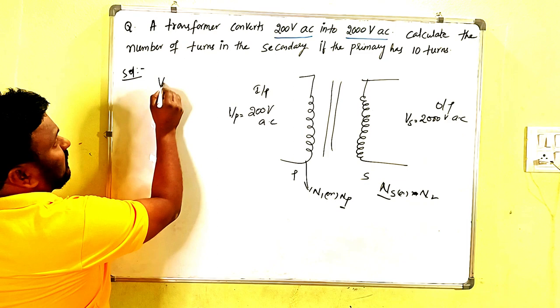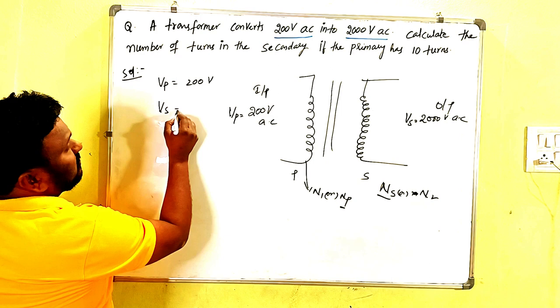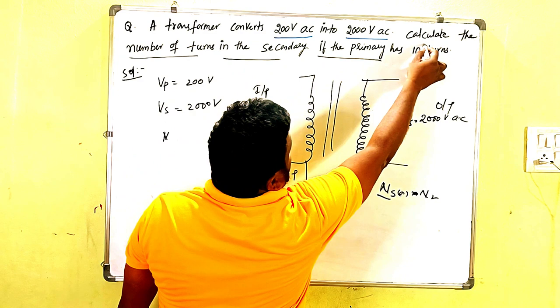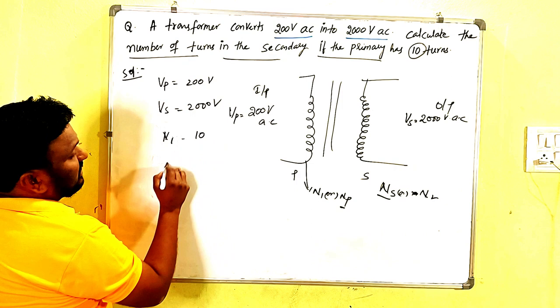So first, what is given? On the primary coil is 200 volts and the secondary coil is 2000 volts. And number of turns in the secondary coil if the primary coil has 10 turns. That's why here N1 is 10 turns and N2 is what we have to find out.